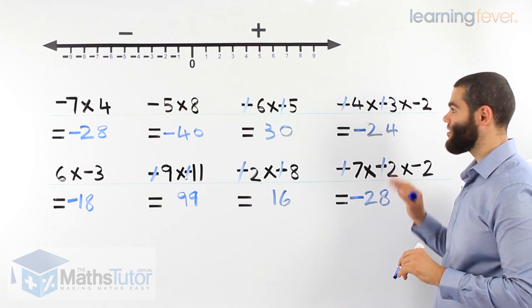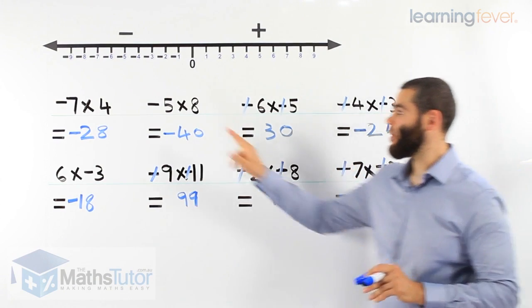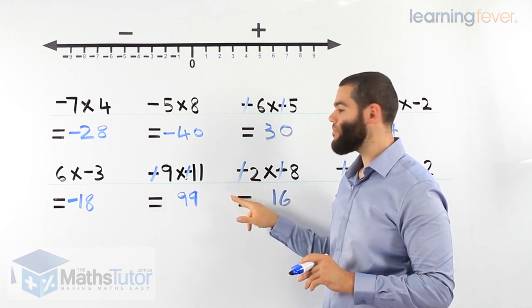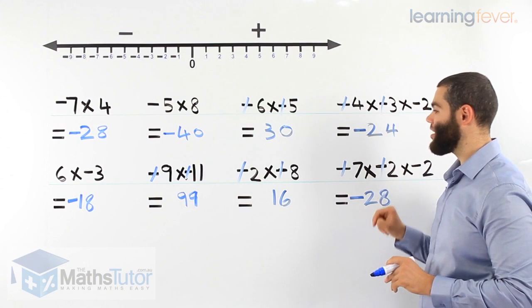Very easy. So once you get the drift, you'll notice it's very easy. If we have one negative, it stays. Two negatives, they partner up. And three negatives, two of them partner up, one stays.